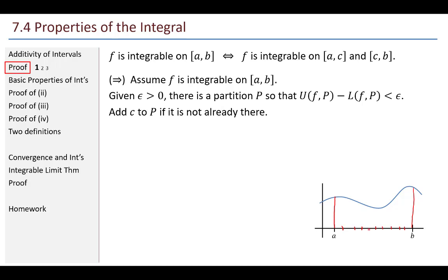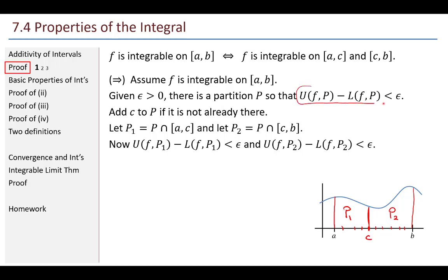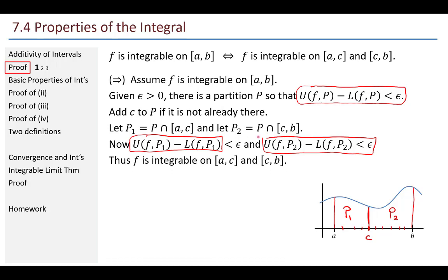Adding c creates two partitions: p1, which is the part of p from a through c, and p2, from c up to b. Now, if the entire partition p has upper sum minus lower sum less than epsilon, then certainly the upper sum minus lower sum of p1 is less than epsilon, and similarly for p2. This shows that f is integrable on both the left interval and the right interval.